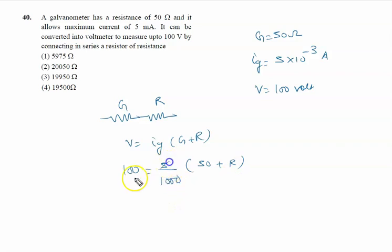So finally it is 5 to the 20, so 20 then triple zero equal to 50 plus R. R we will calculate, it is 19950 ohm.